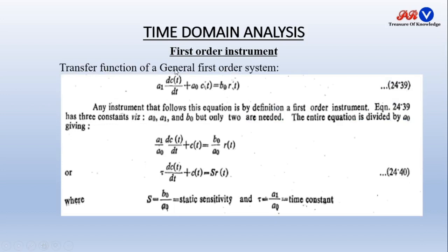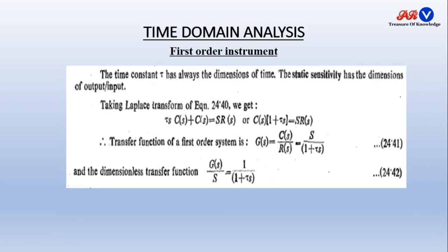Let us take a general look at the transfer function for the first order system. This is the first order equation. After dividing all terms by A0, we get: (A1/A0) is known as τ (time constant), and S = B0/A0 is the static sensitivity. Time constant τ always has dimensions of time. Static sensitivity has dimensions of output divided by input. Taking the Laplace transform, we get transfer function G(s) = C(s)/R(s) = S / (1 + τs). The dimensionless transfer function is G(s)/S = 1 / (1 + τs).